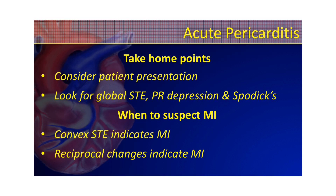Your take-home points for acute pericarditis: consider the patient's presentation — every EKG comes with a patient. Look for global ST elevation, PR depression, and Spodick's sign. When do you want to suspect a myocardial infarction? Whenever there's convex ST elevation, whenever there's reciprocal changes, and keep that possibility in mind for anybody. Get your trends — do your 12-leads with every set of vital signs and watch for changes. That dynamic 12-lead is going to make you lean more towards an acute MI than an STE mimic.